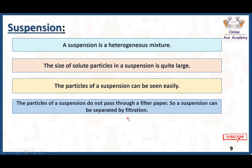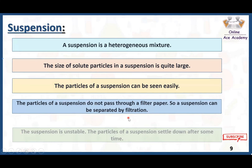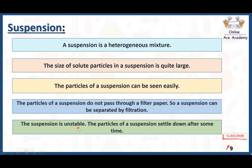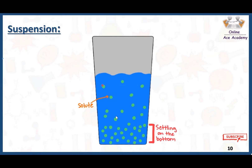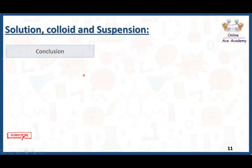The particles of a suspension don't pass through filter paper, so a suspension can be separated by filtration or any other physical means. The suspension is unstable — the particles settle down after some time due to gravitational pull. We can see all these particles with our naked eye, and because they are unstable they will settle down to the bottom.